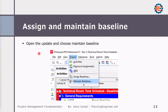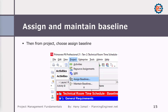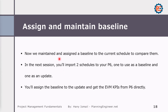Assigning and maintaining a baseline is very simple. Go to Project, then Maintain Baseline. From here you can either save a copy of the current schedule as a new baseline if you have not updated it yet, or convert another project into a baseline so it will be kept in your database. After maintaining the baseline, go to Project, Assign Baseline, and select the project. You will find whatever baseline you maintained listed here, in both the project baseline and primary baseline fields. In the next session we'll import two schedules to P6 — one as a baseline and one as an update — to see how to manage and view all the schedule data.